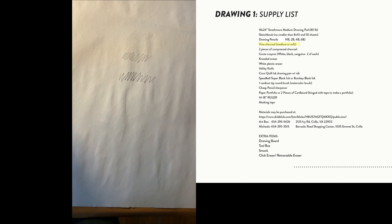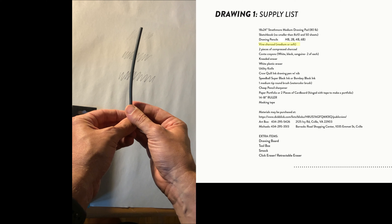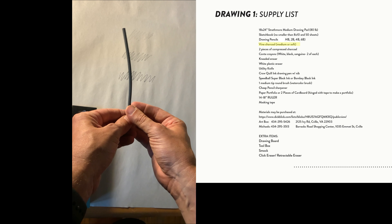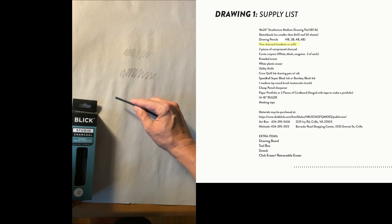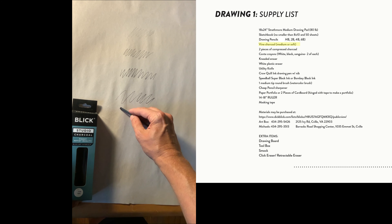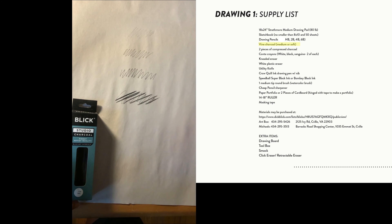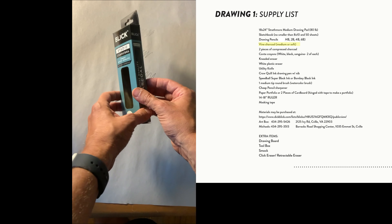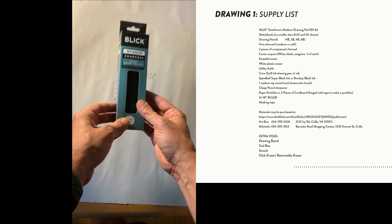Next we'll get vine charcoal — a charred vine, usually willow or grape, used as a drawing material. Get the soft variety, which allows us to make darker marks. It usually comes in a box, and I want you to get between 8 and 12 sticks so we have enough to work with.